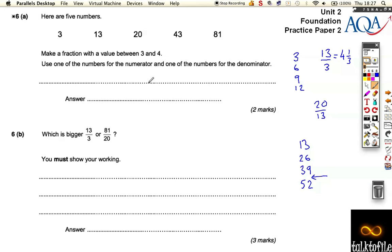So if we write the fraction 43 over 13, we're going to get a number that is bigger than 3, because that would be 39 over 13, but smaller than 4, which is 52 over 13. That's a really tricky question. I really don't like that question.